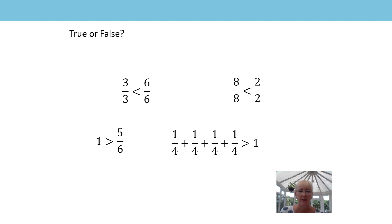We've got a different style of question now. For each pair, think carefully if each statement is true or false, and think about the reasoning you'll use. Pause your video while you work through each one and remember to justify your answer. First: three thirds is less than six sixths — do we agree? No, we don't. When the numerator and denominator are the same, it's equivalent to one. Both fractions are equivalent to one, so they are equal to each other.